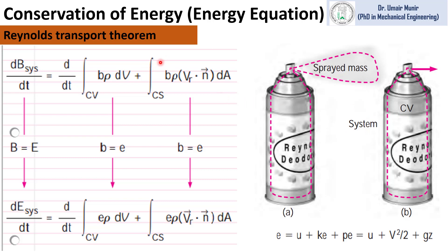For the derivation of the energy equation, we replace the capital B — which is a general property of a system — with E (energy), and small b with small e, where small e is energy per unit mass. Small e is the sum of internal energy, kinetic energy, and potential energy per unit mass. After this replacement, we obtain the energy equation.